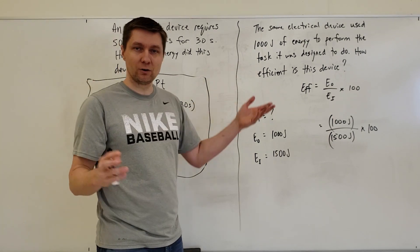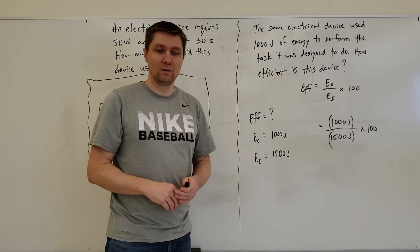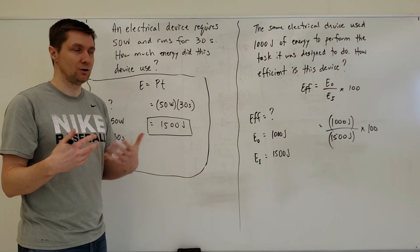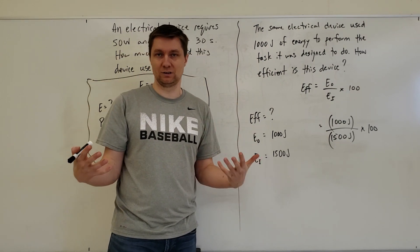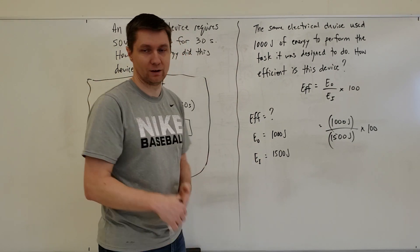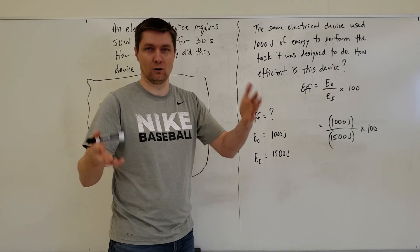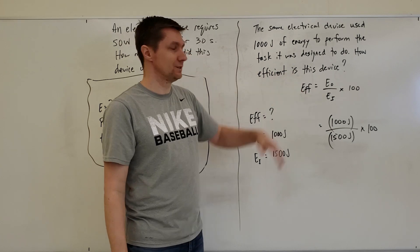Continuing with part two: if we've got the same device that uses 1500 joules that it took in, and it used 1000 of those joules to actually perform the task it was designed to do - whether that's dry clothes, dry hair, or curl hair - how efficient is this device?